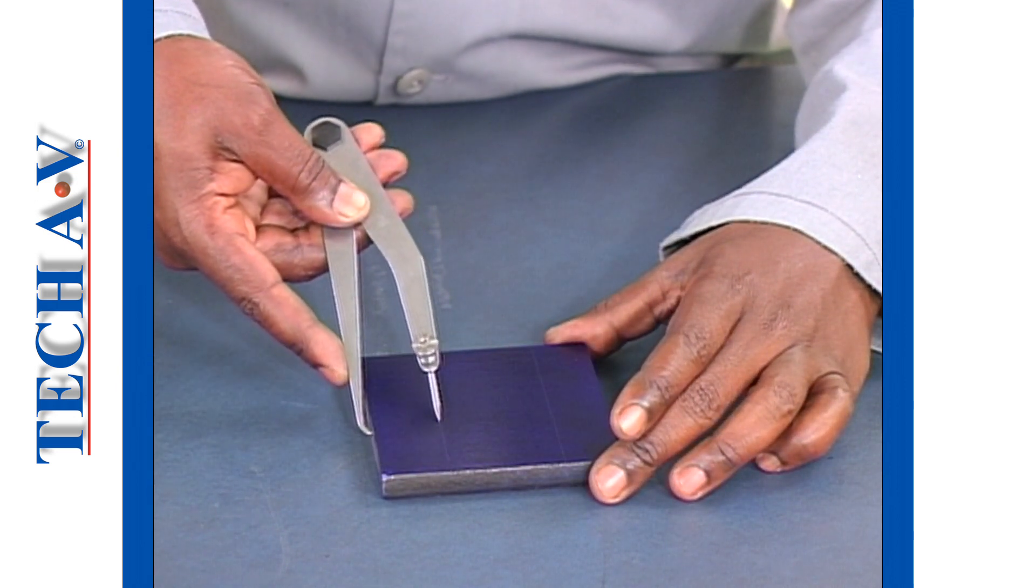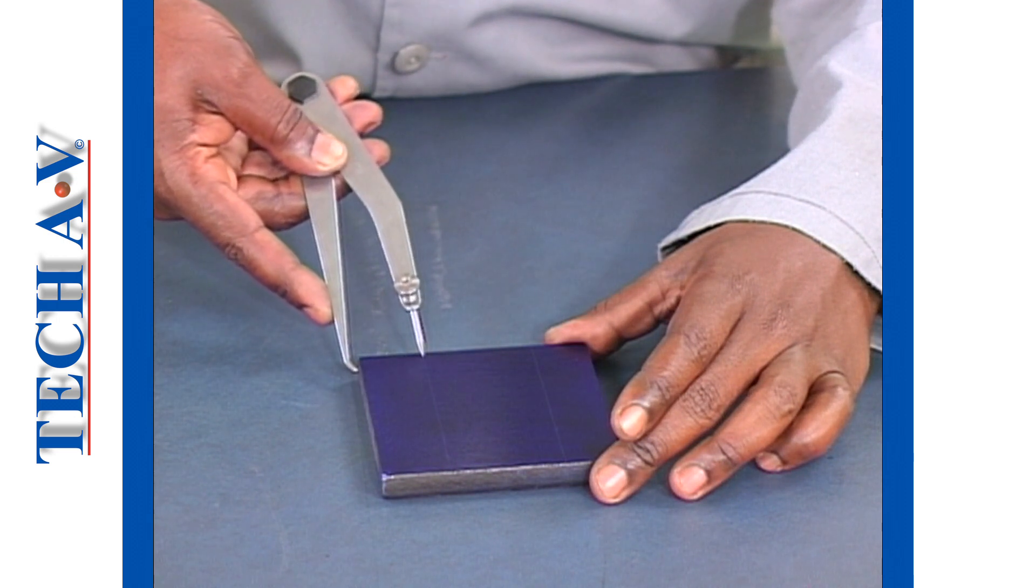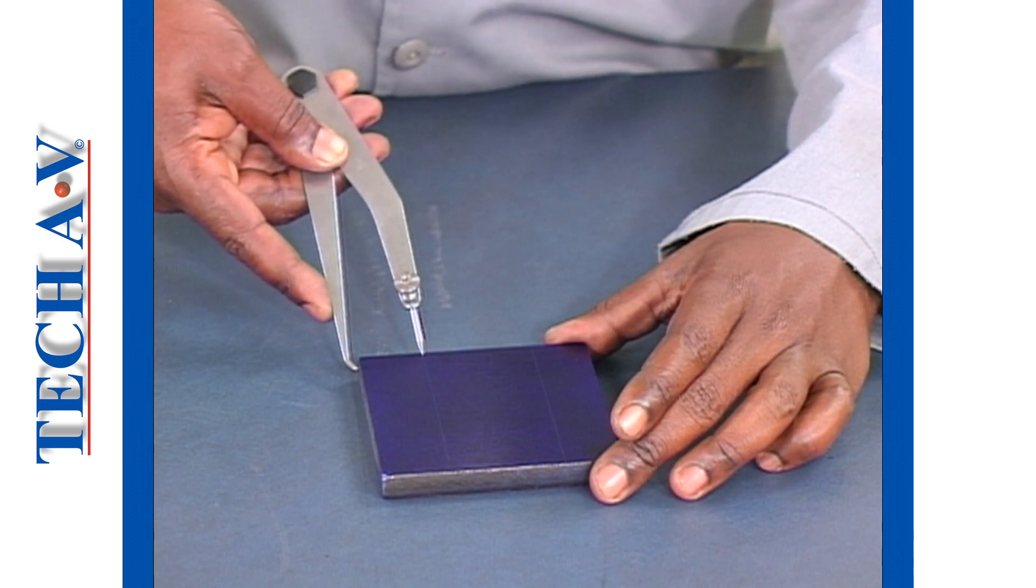The curved leg is used to run along the edge of the workpiece, and the sharp point scribes a line, as demonstrated, onto the marking blue.